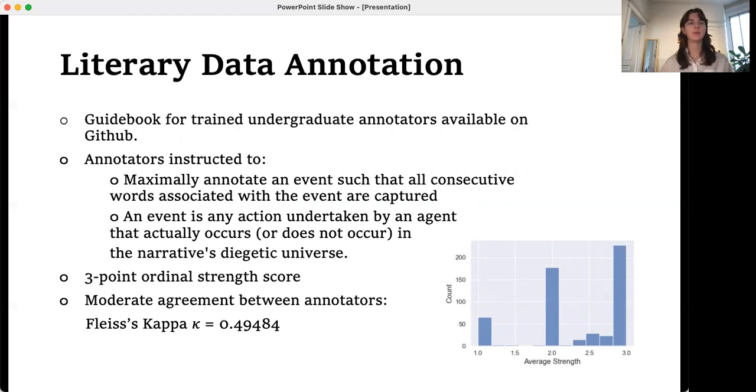In order to annotate causal event pairs, over the course of several weeks, we trained a team of three undergraduate annotators, all with majors in the humanities. In addition to being provided Van den Broek's schema, annotators were instructed to maximally annotate an event so that all consecutive words associated with an event were captured. We define an event for our purposes as any action undertaken by an agent that actually occurs in the diegetic universe of the narrative. Negative events, things that don't happen, can be both the causal or caused event in our framework, but hypothetical events could not. We also condition our event pairs on three sentence excerpts, so we only observe event pairs that are within a maximum of two sentences apart.